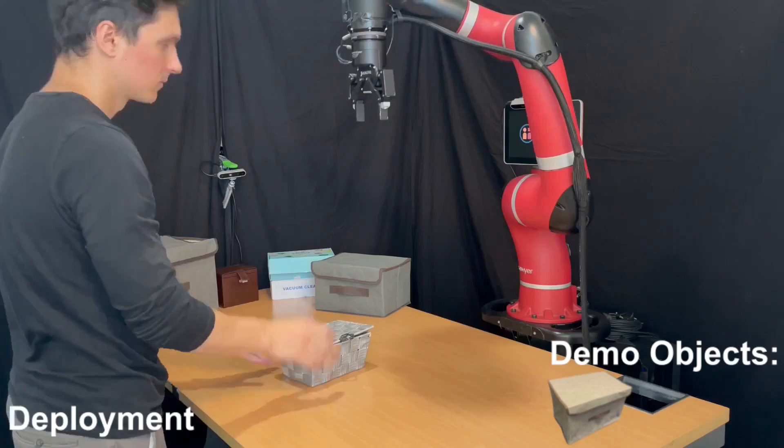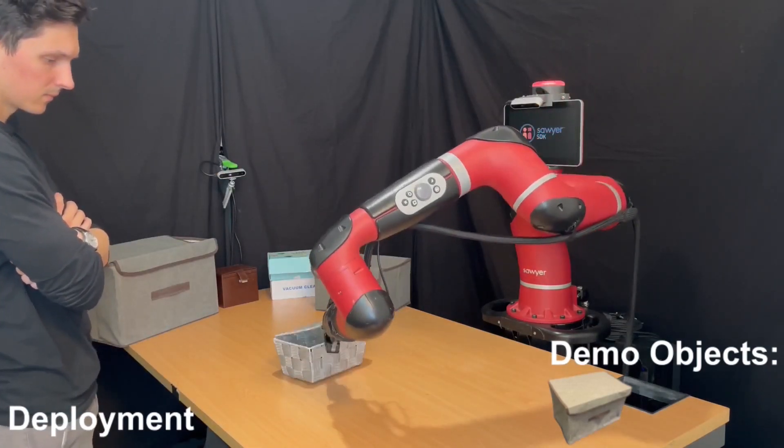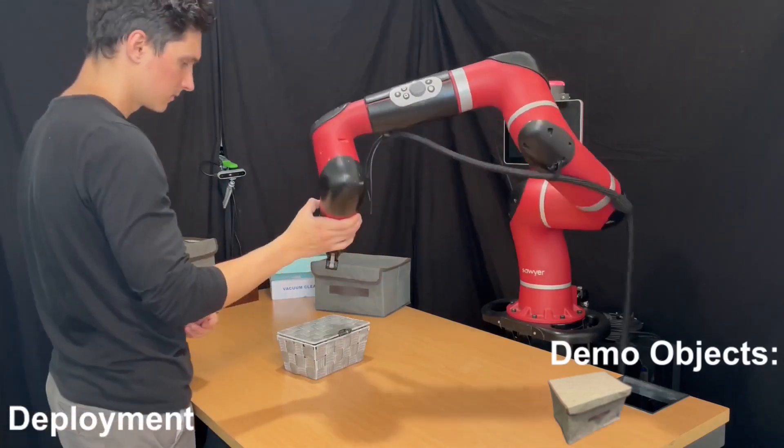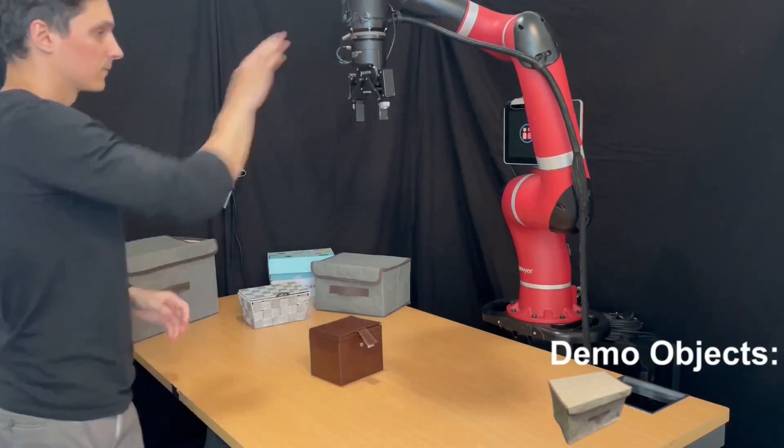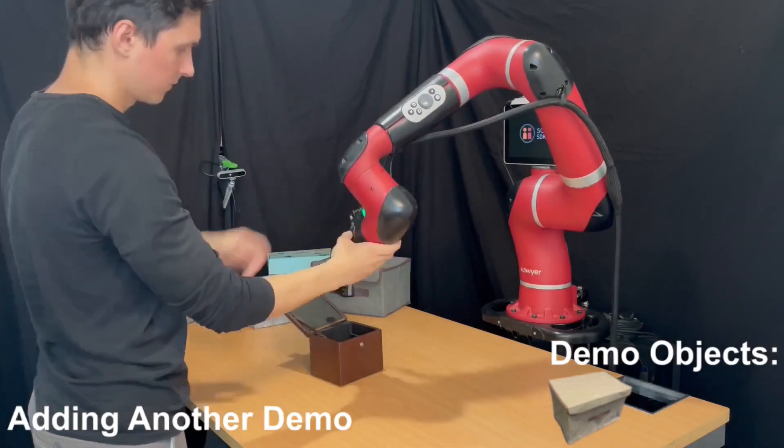Here, you can see me providing a demonstration of how to open a big box, and when the model is deployed using a medium-sized box, it fails. In this case, the information provided in the context is insufficient to disambiguate the task and how it should be solved.